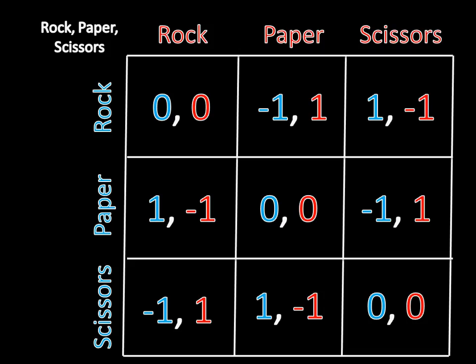That is, you play rock, paper, and scissors, each with probability one third. Let's use the rules of Nash Equilibria we've learned in previous videos to confirm this.